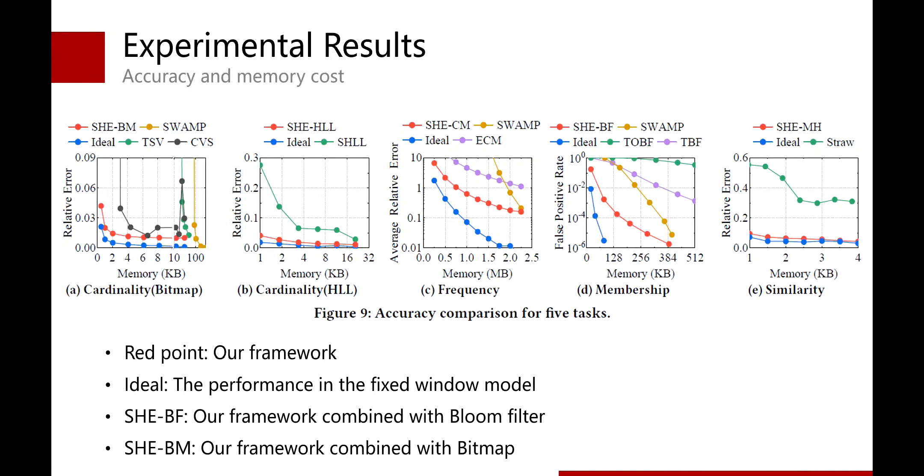We compare the accuracy of SHE with both the related work and the ideal goal in each query task. The related work includes both general sliding window algorithms and many variants of each approximate algorithm. The ideal goal of each query task is the accuracy achieved if we treat the sliding window task as a fixed window task. For example, we insert all items in the sliding window to an empty bloom filter and calculate the membership accuracy as the ideal goal of the bloom filter. Our experiment shows that our framework achieves the best accuracy when the memory is small in every task. When the memory is large and sufficient, our framework is not the best one.